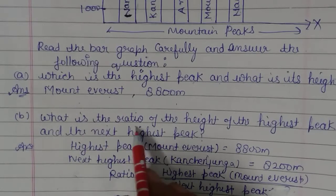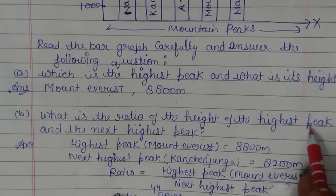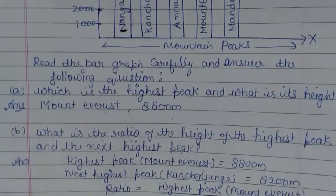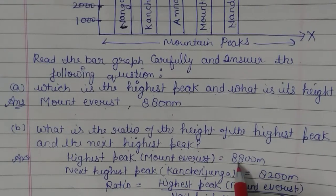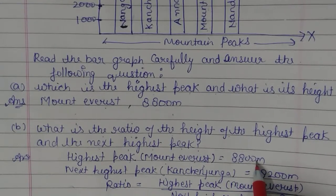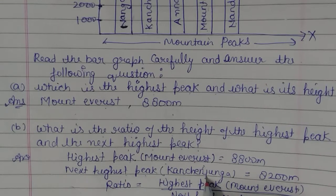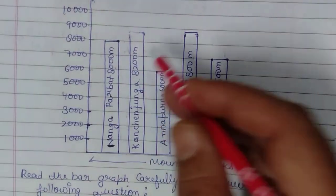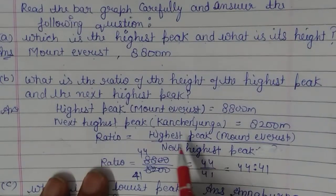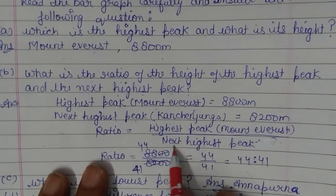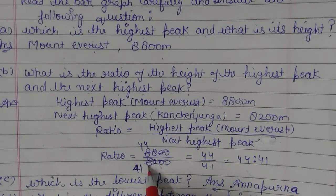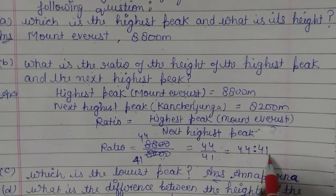What is the ratio of the height of the highest peak to the next highest peak? The highest is Mount Everest at 8,800 metres and the next highest is Kanchenjunga at 8,200 metres. Cancelling zeros and dividing by 2 gives the ratio 44:41.